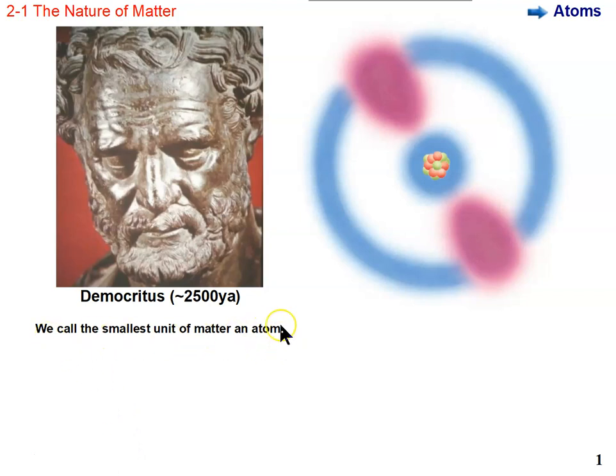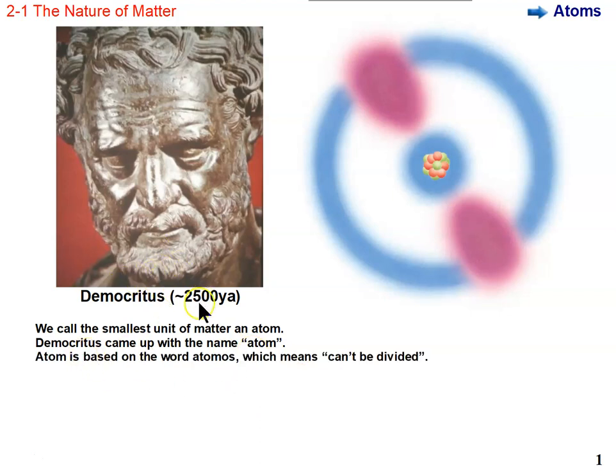We call the smallest unit of matter an atom, and we name it or call it an atom because of Democritus, who approximately 2,500 years ago came up with the concept that there must be something so small that you can't divide it any further. He conceptualized it, but he didn't know what atoms were. He just came up with the idea, and that's why we call atoms atoms.